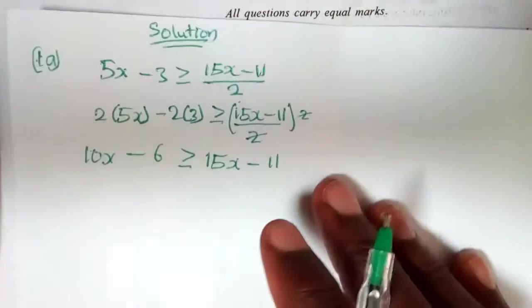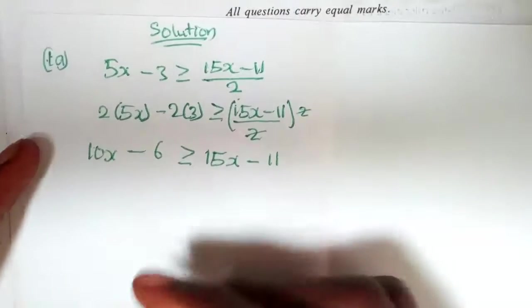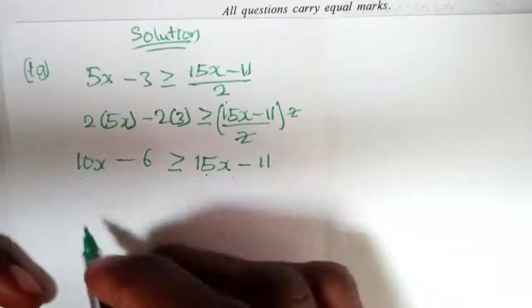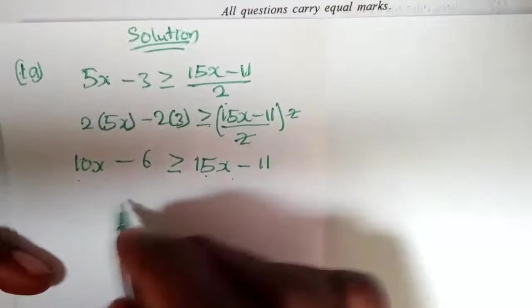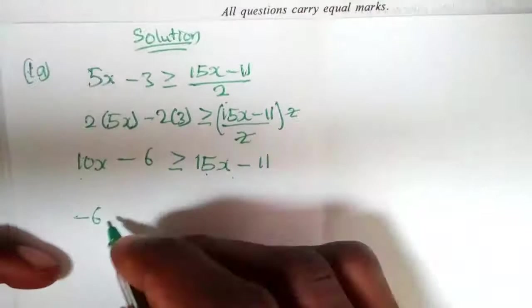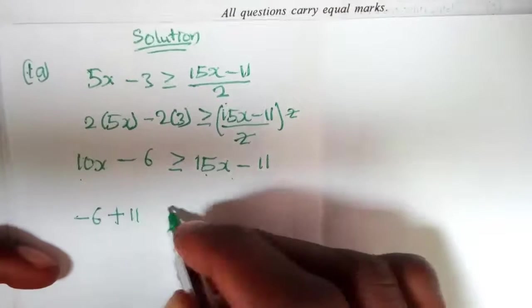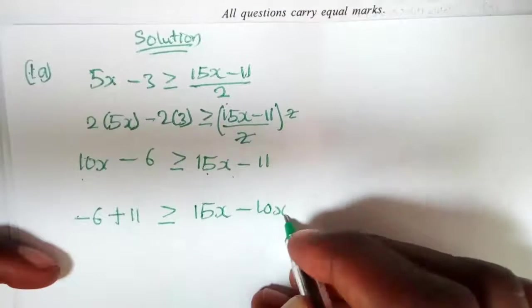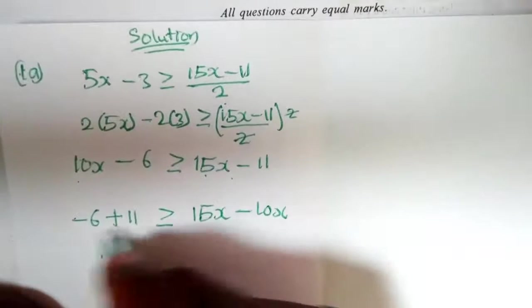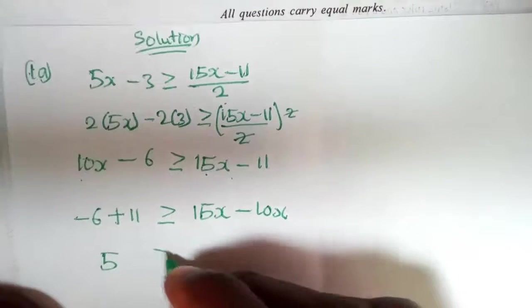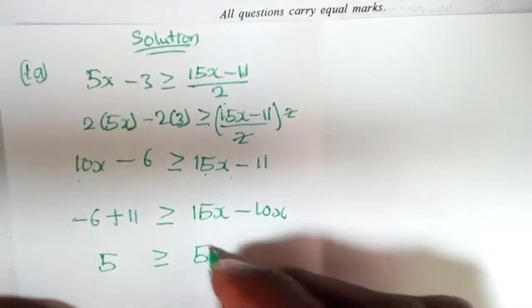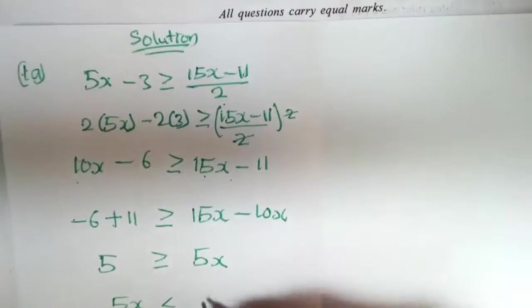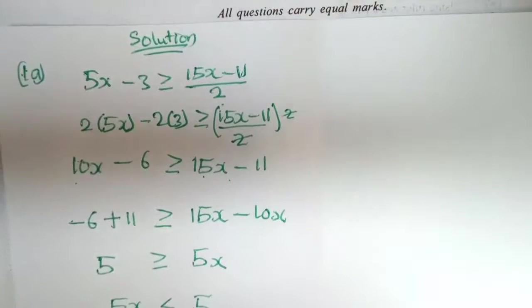Now we group like terms. Because I want to avoid negative signs, I bring the 10x to the right side instead. So we have negative 6 plus 11 is greater than or equal to 15x minus 10x, which gives us positive 5 is greater than or equal to 5x. We can rewrite this as 5x is less than or equal to 5.